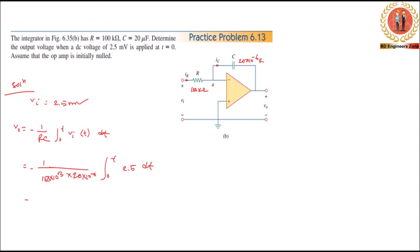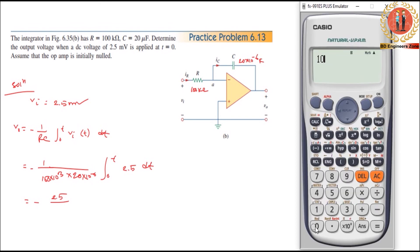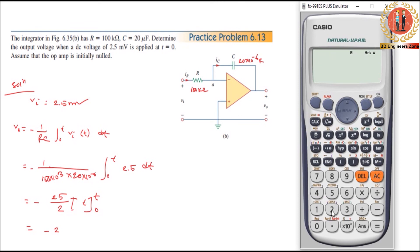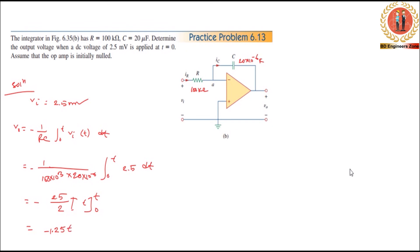As we have done before, computing the integration: minus 2.5 divided by 2 gives 1.25, so V0 equals minus 1.25 T millivolt. This is our correct answer for the practice problem.